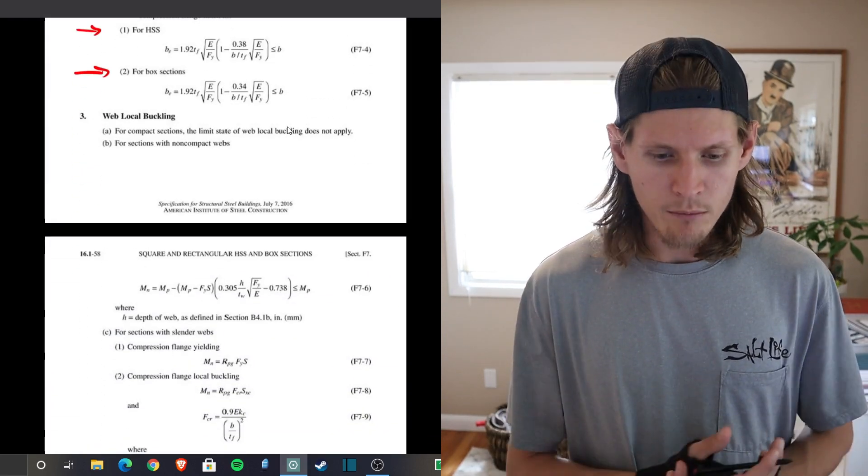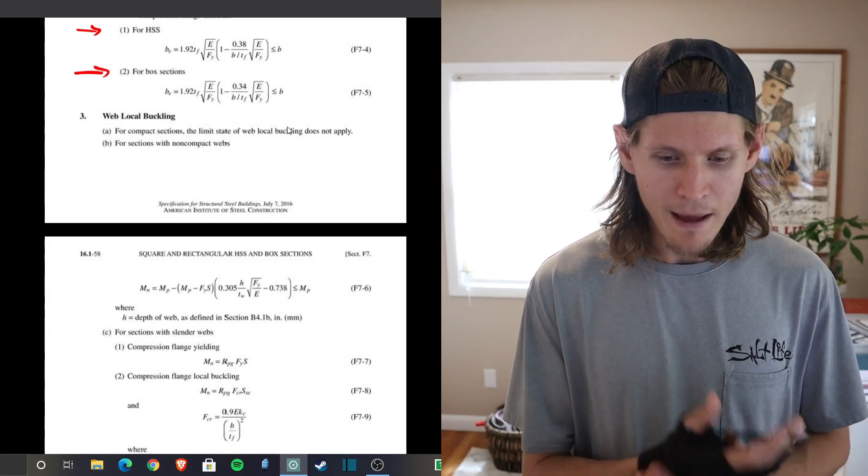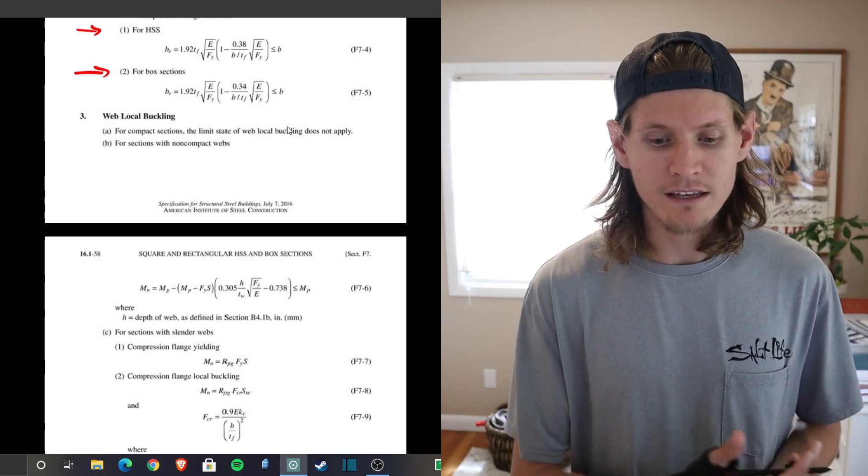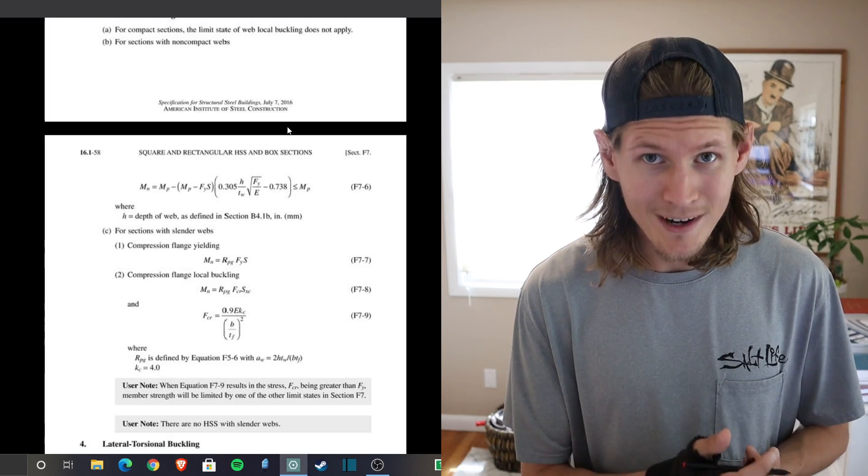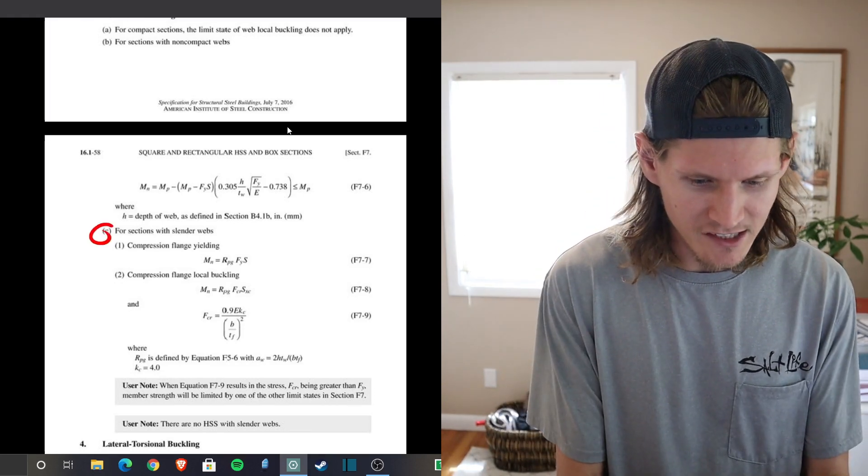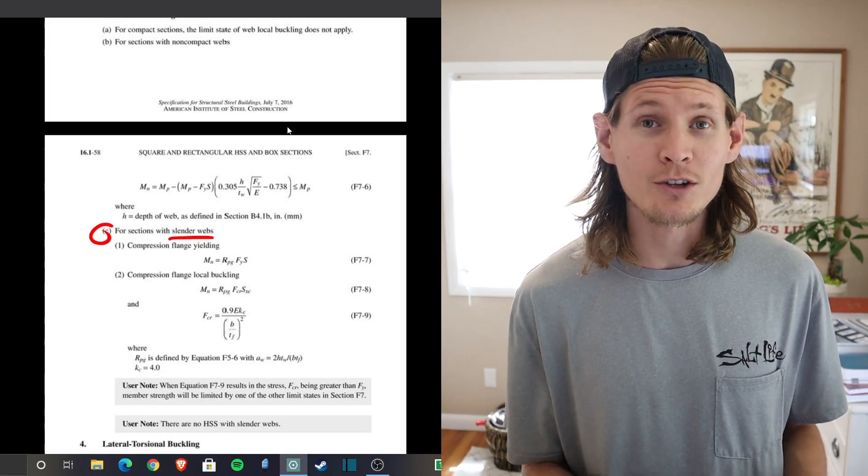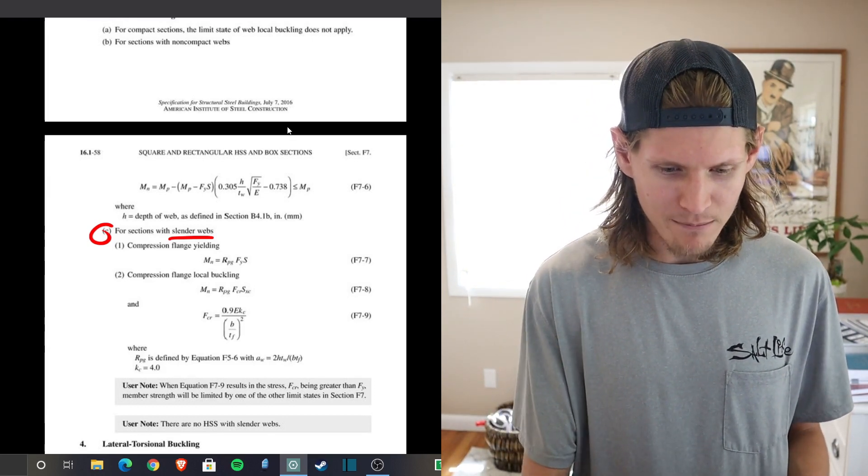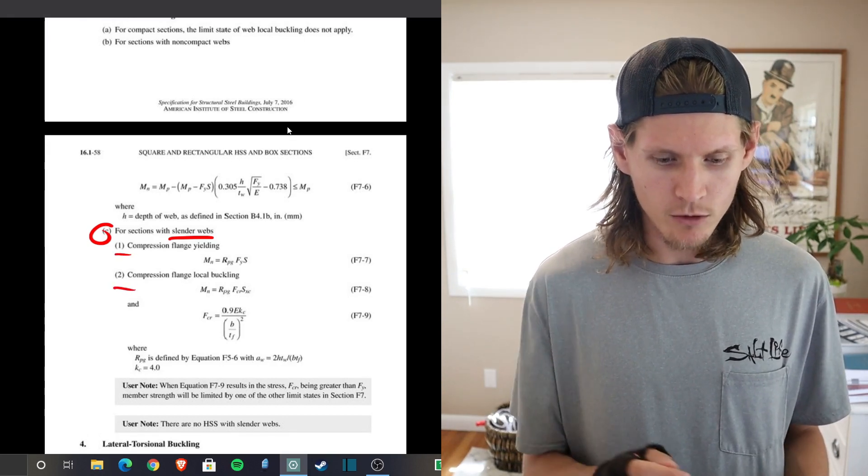The other limit state web local buckling they give you sections that are compact where it doesn't apply for case A. For case B they give you non-compact option and they give you an equation. And then something new that they've added is case C for sections with slender webs. This was not originally included in the 14th edition. It's now here for the 15th and it breaks down into compression flange yielding and compression flange local buckling.